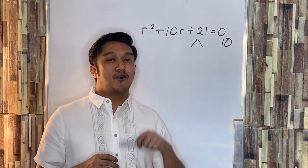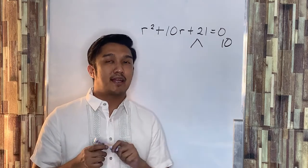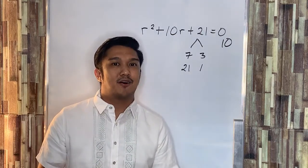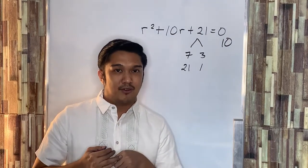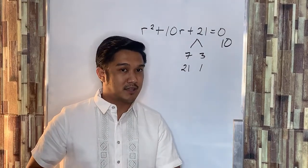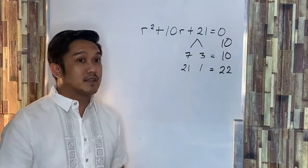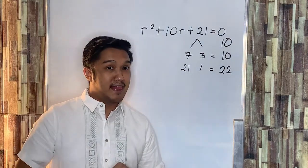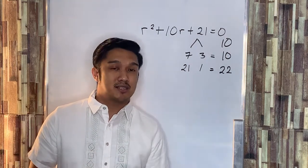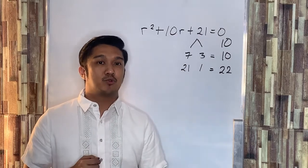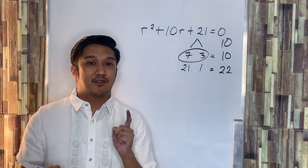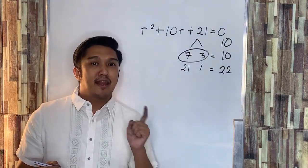Since the sign of the last term is positive, therefore the sign of the two factors are both positive. Since the sign of the middle term is positive, therefore the sum of the two numbers is also positive. Let us add up the two factors. The sum of 7 and 3 is 10, and the product of 7 and 3 is 21. We will consider the two factors whose sum equals the middle term, which is 10. Therefore, we will consider the factors 7 and 3.